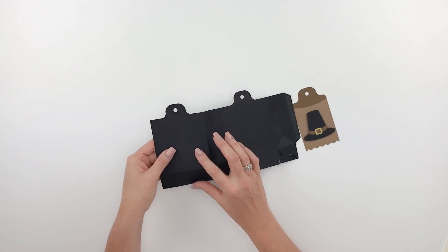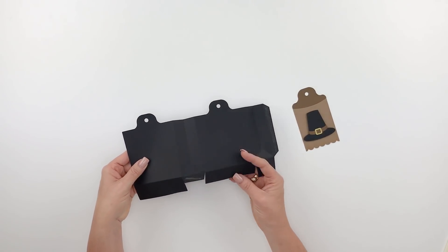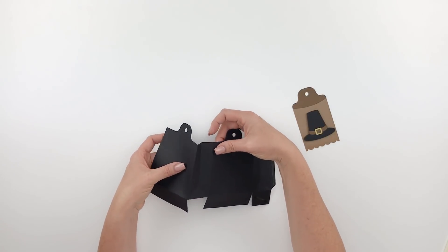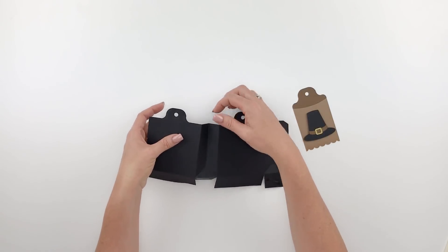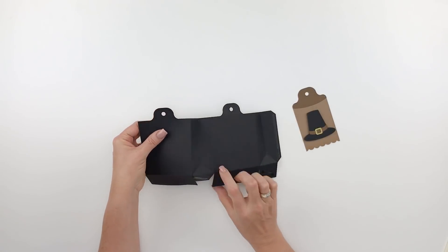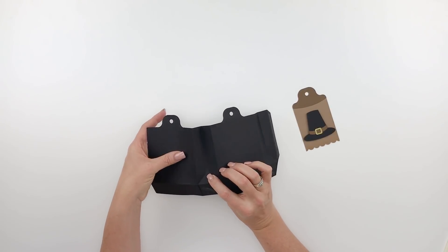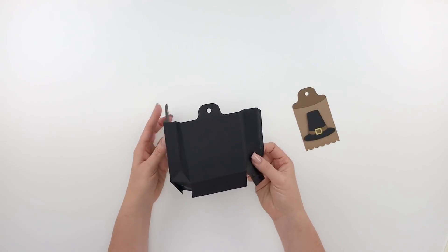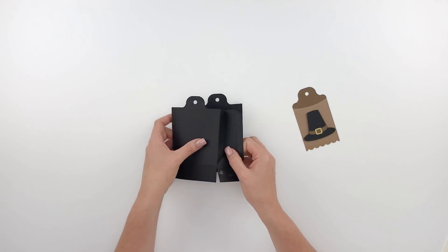You'll want to go ahead and fold towards the center on all the score marks. You'll notice on the sides there's some little gusseted sides, so they valley fold in the middle and then they have the little triangle down at the bottom to help the bag sit properly. So once you have all of those folded and going the right direction, go ahead and put your glue tab.